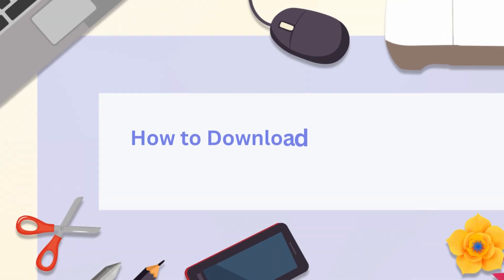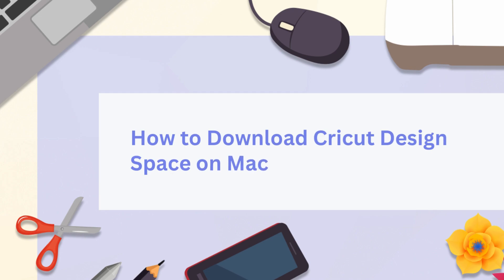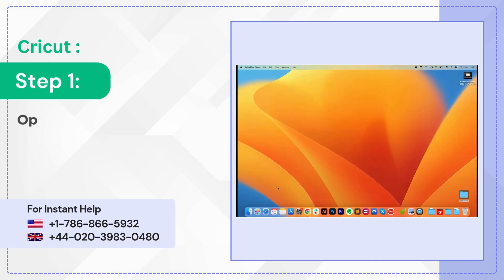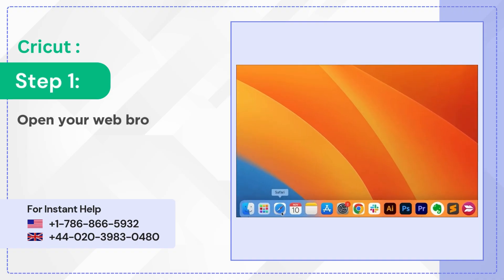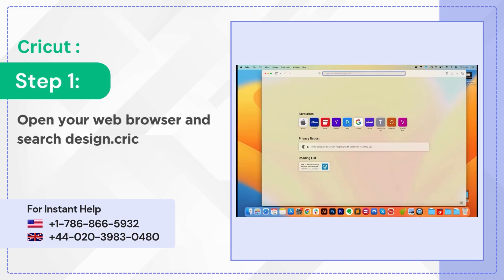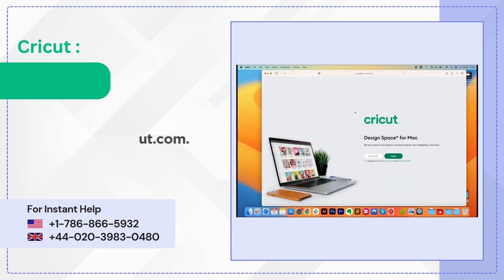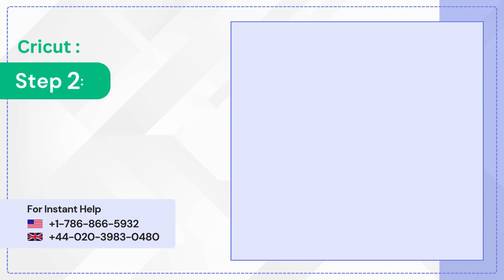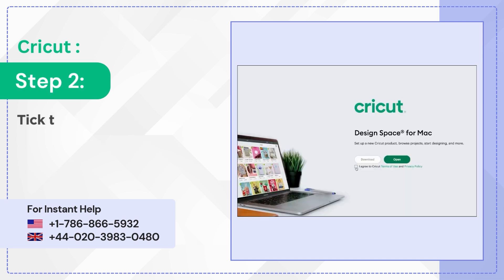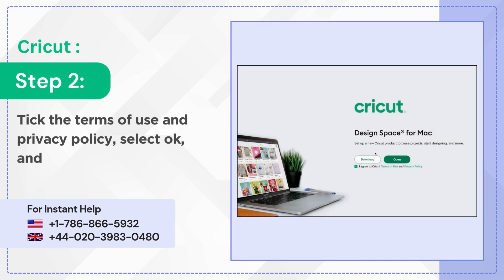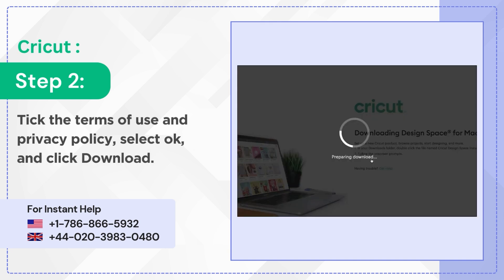How to Download Cricut Design Space on Mac. Step 1: Open your web browser and search design.cricut.com. Step 2: Tick the Terms of Use and Privacy Policy, select OK, and click Download.